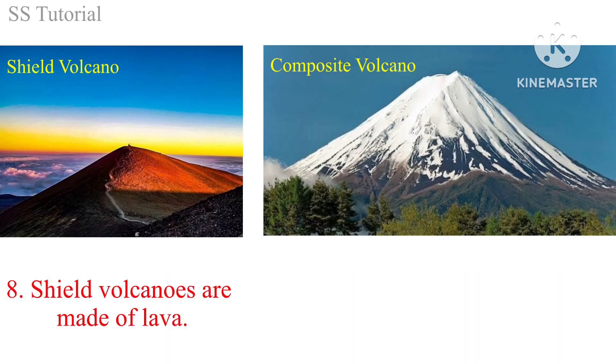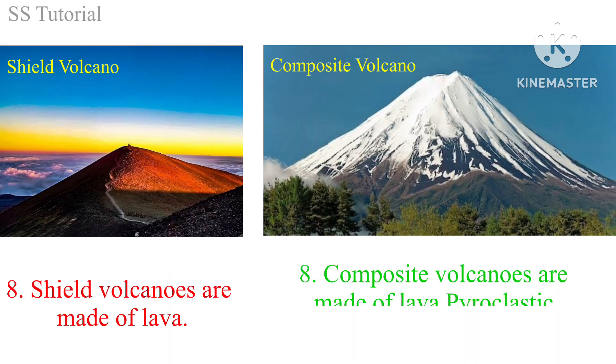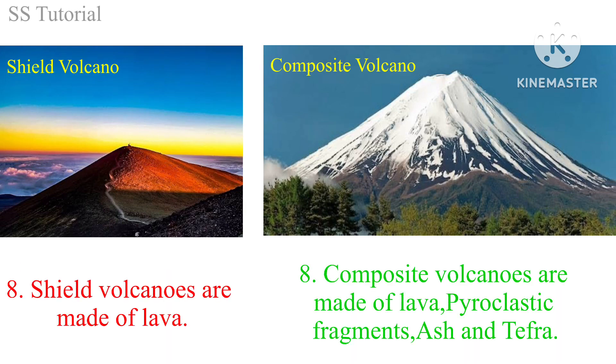Shield volcanoes are made of lava, whereas composite volcanoes are made of lava, pyroclastic fragments, ash, and tephra.